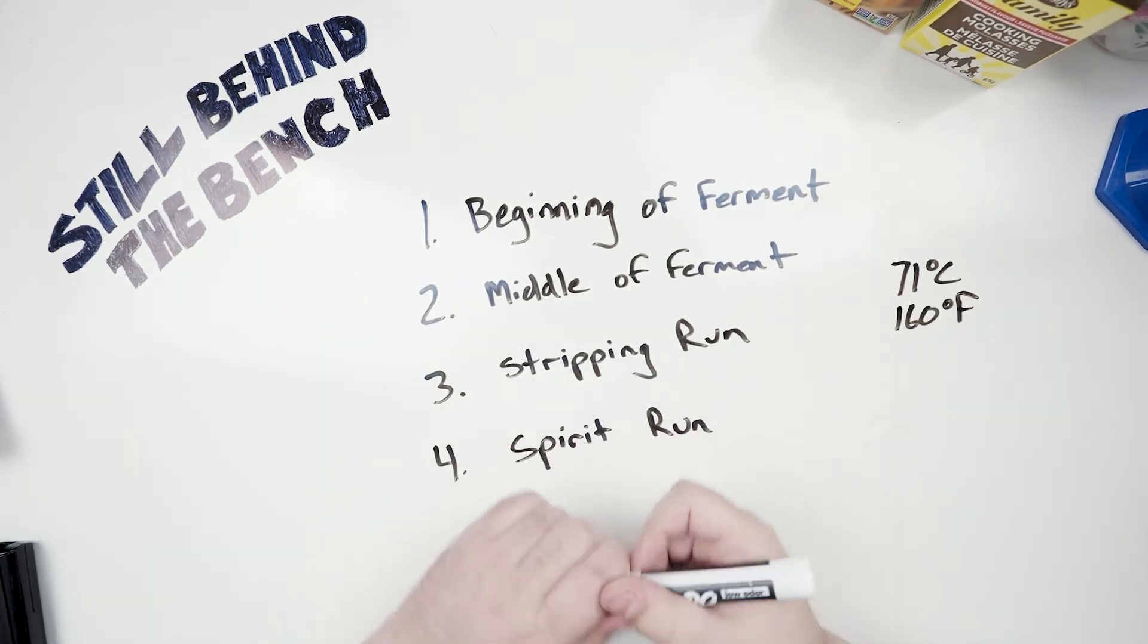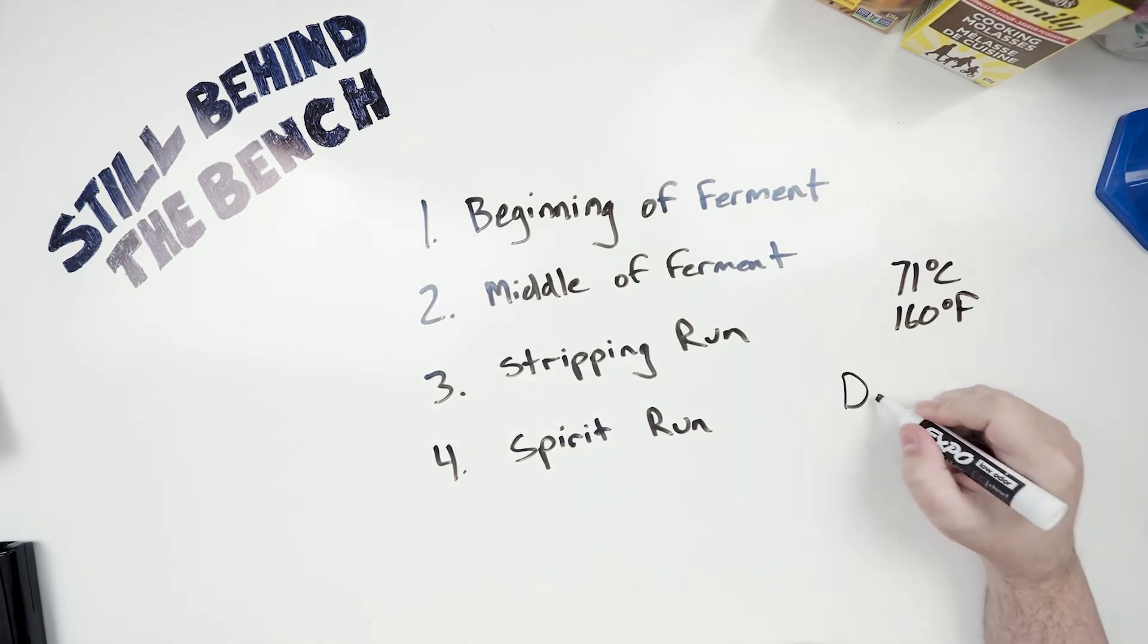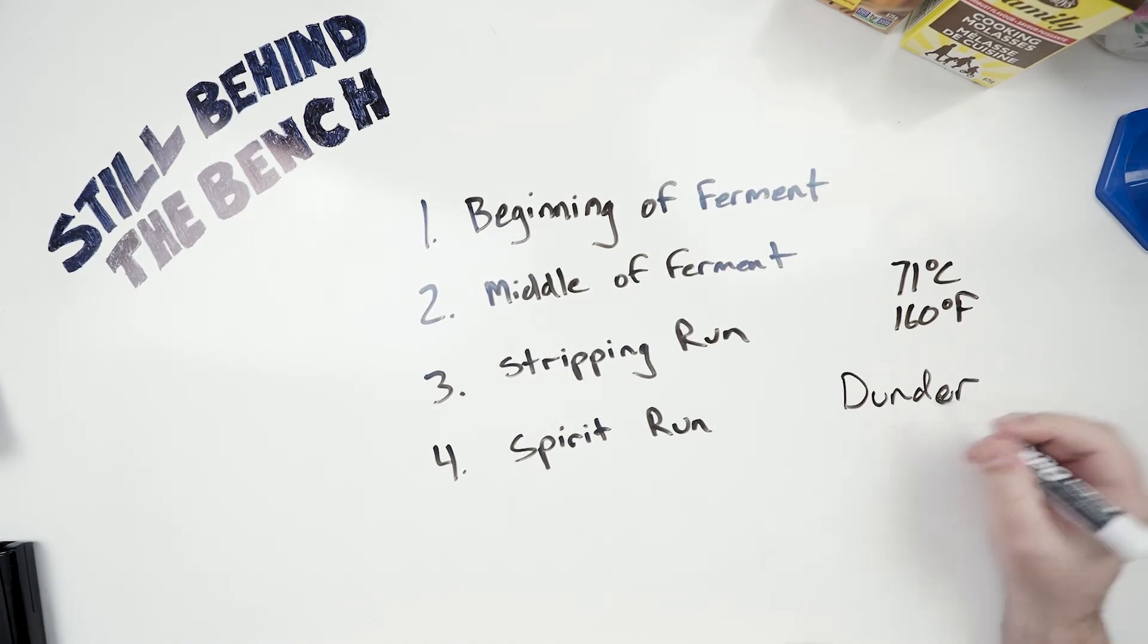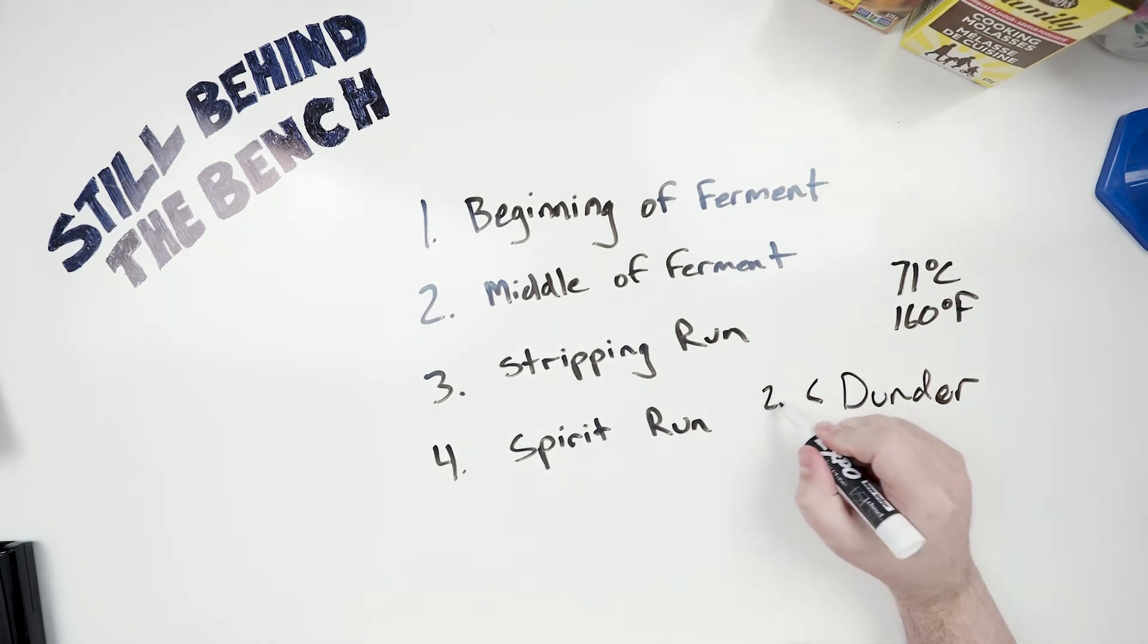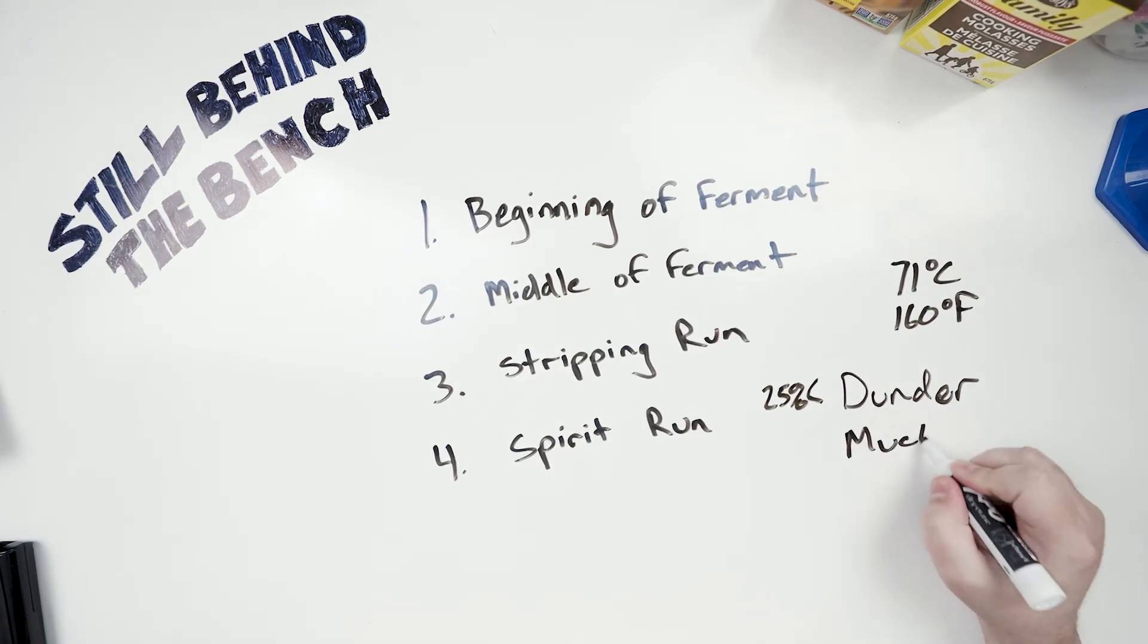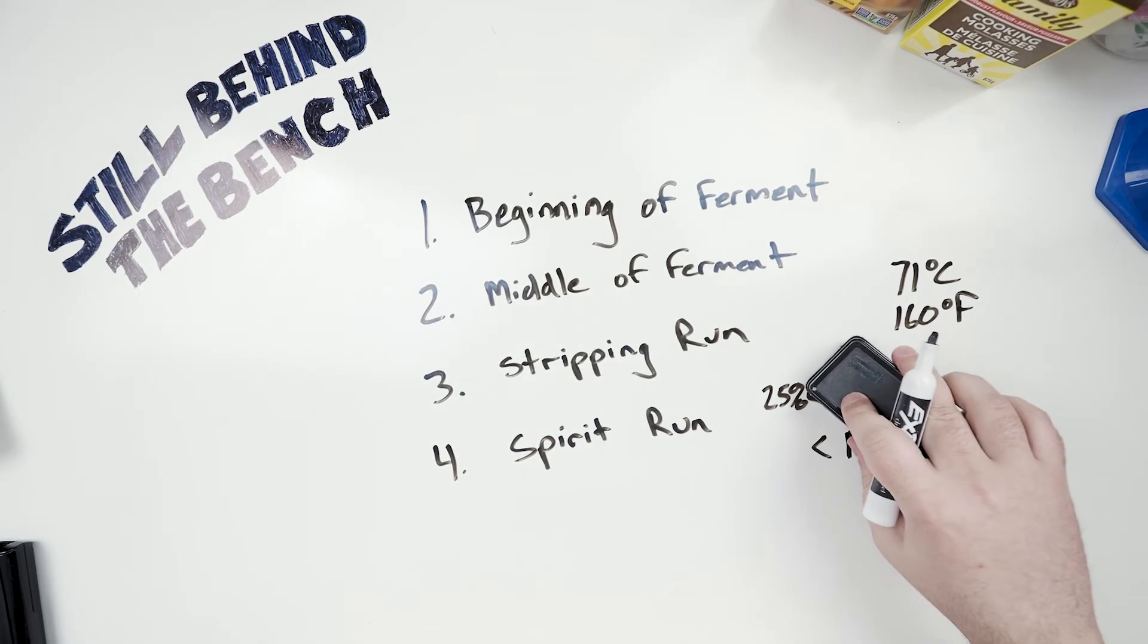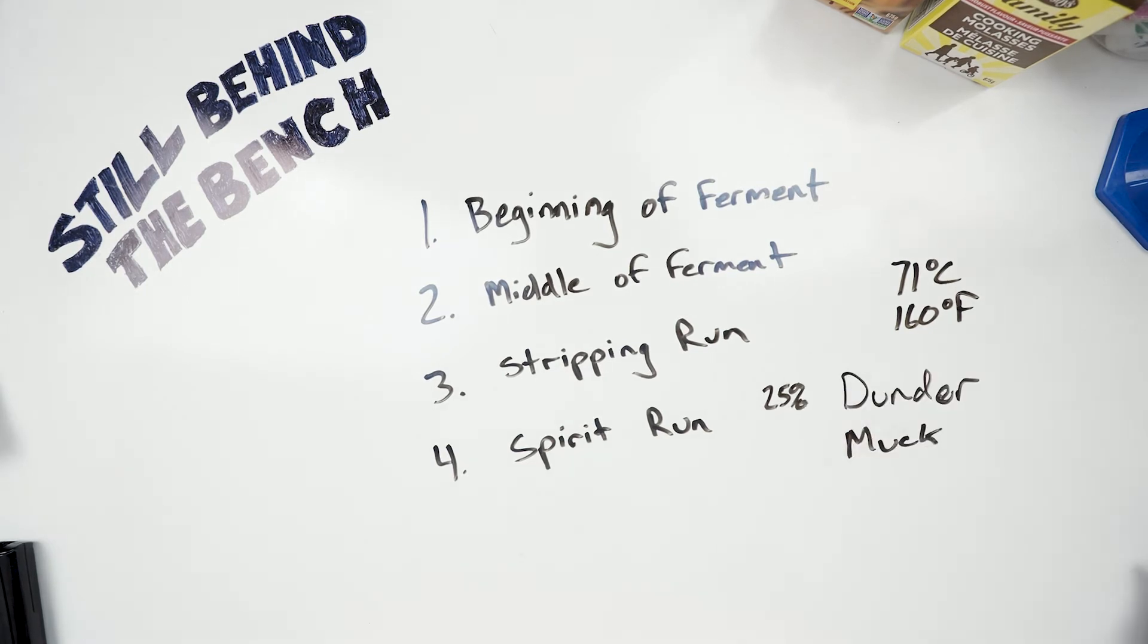And if you're going to be putting it into your still for your runs, stripping run or spirit run, you don't need to sterilize it first obviously because it's going to be sterilized as you heat it up. In terms of what volumes to use, I'd use less than 25 percent of the final volume for dunder and for muck I wouldn't go more than 15 percent. I mean you can experiment obviously depending on the composition of your dunder and muck you may need to use more or less, but a good rule of thumb is 25 percent and 15 percent.